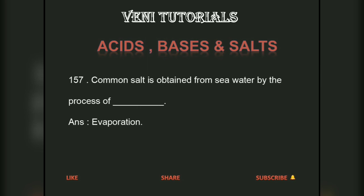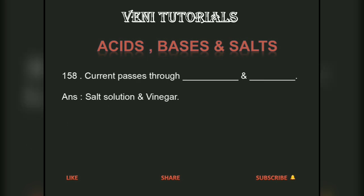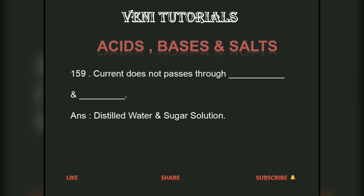Common salt is obtained from sea water by the process of dash — answer: evaporation. Electric current passes through dash and dash — answer: salt solution and vinegar. Current does not pass through dash and dash — answer: distilled water and sugar solution.